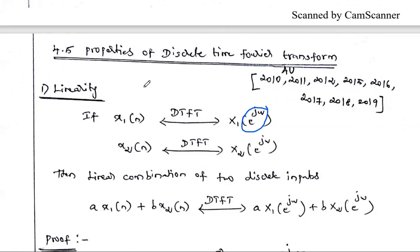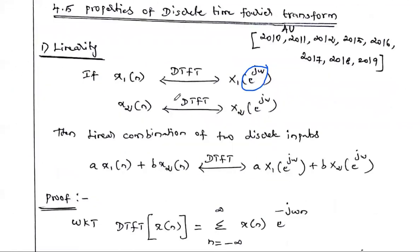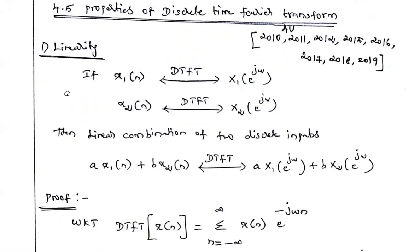Now we are going to study two properties in this video, and in the next video we will solve some more properties. The first property is linearity. We already discussed the linearity property in the Fourier transform and Laplace transform — the link is in the description box. All mathematical transforms obey the linearity property.